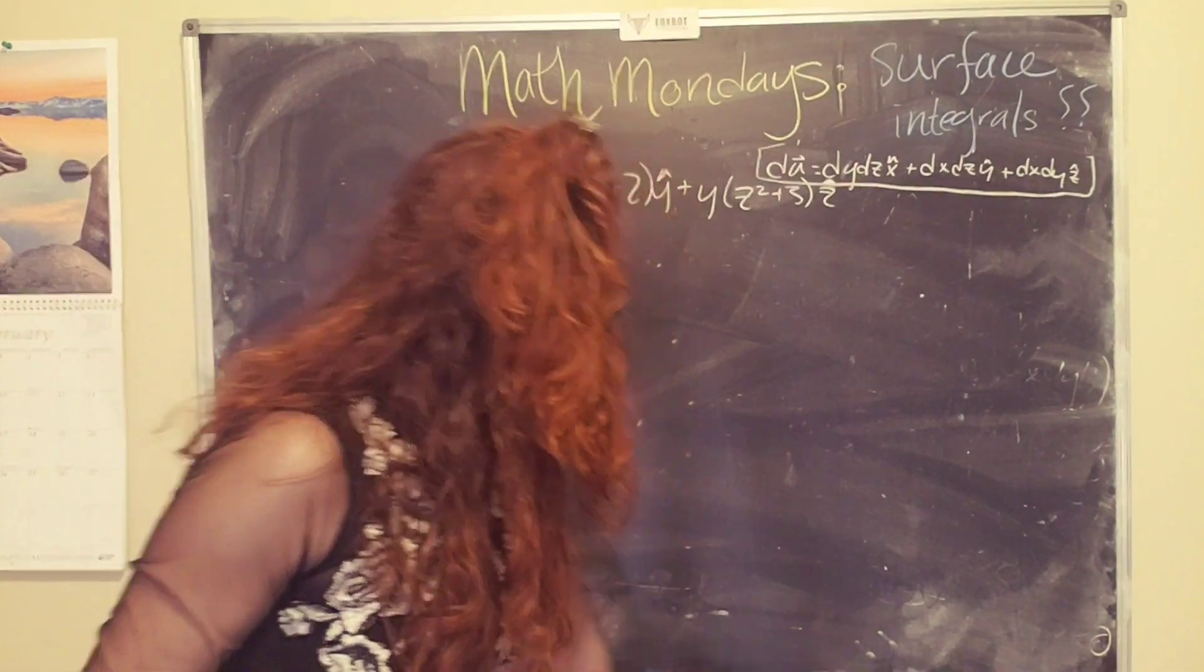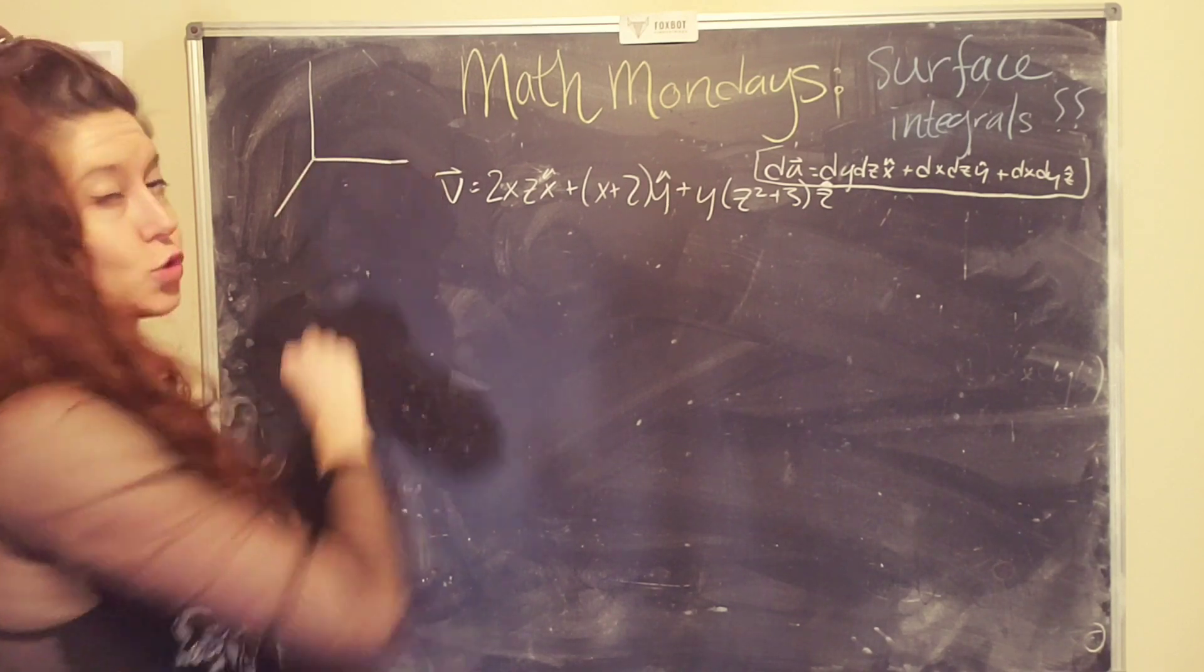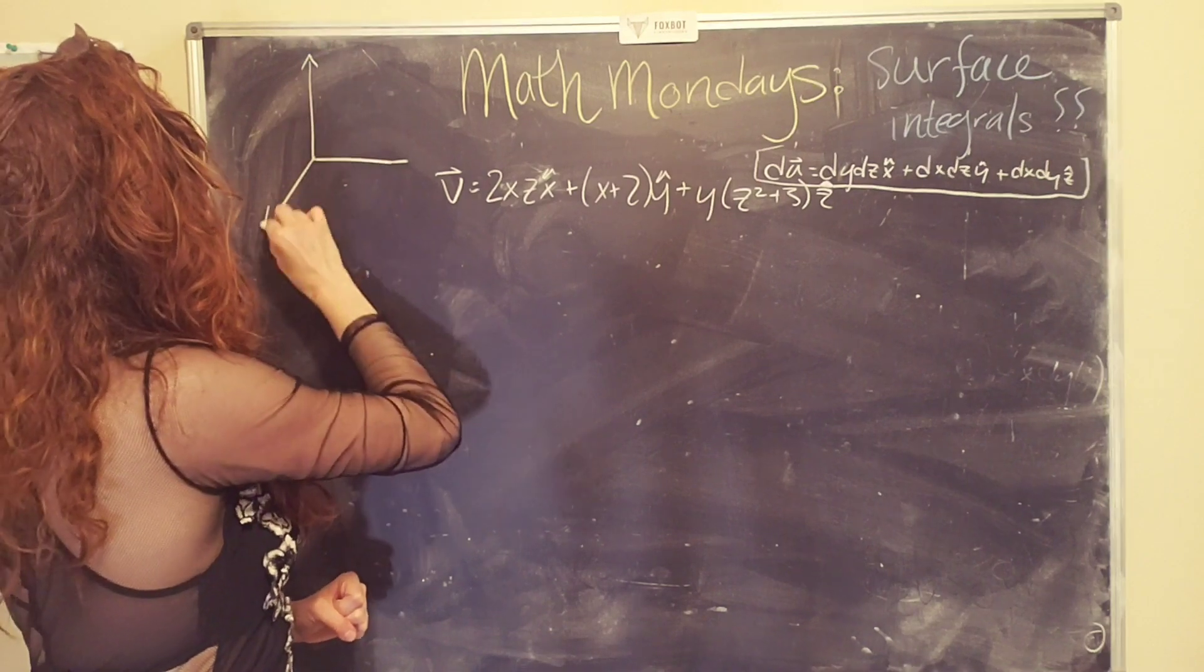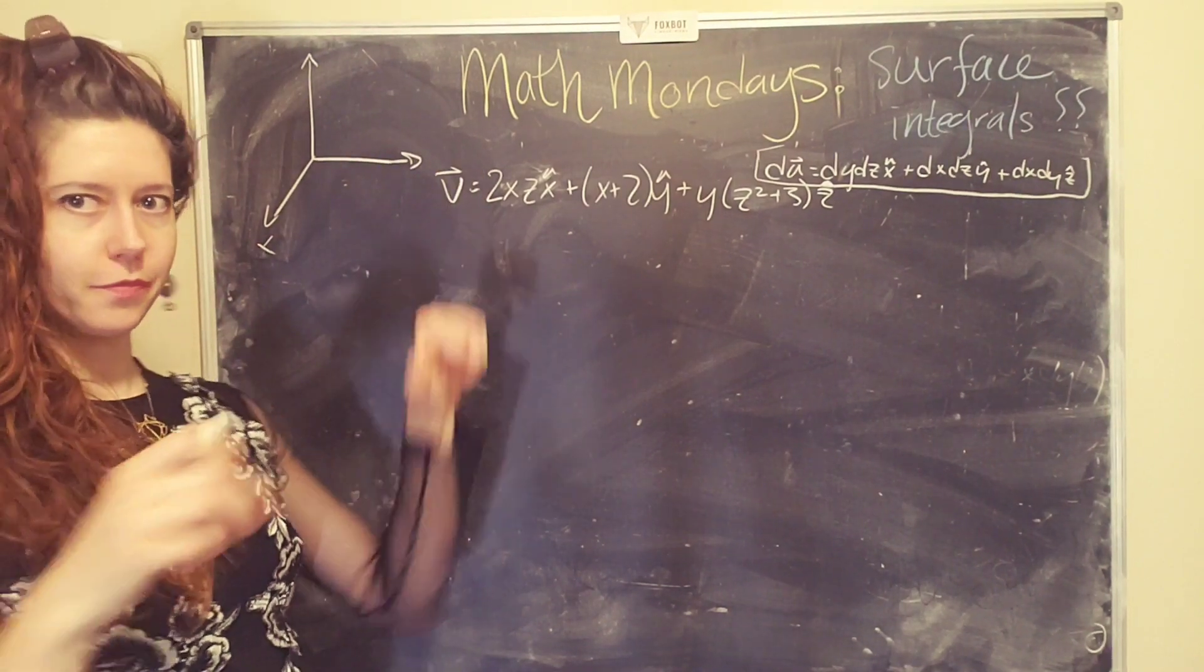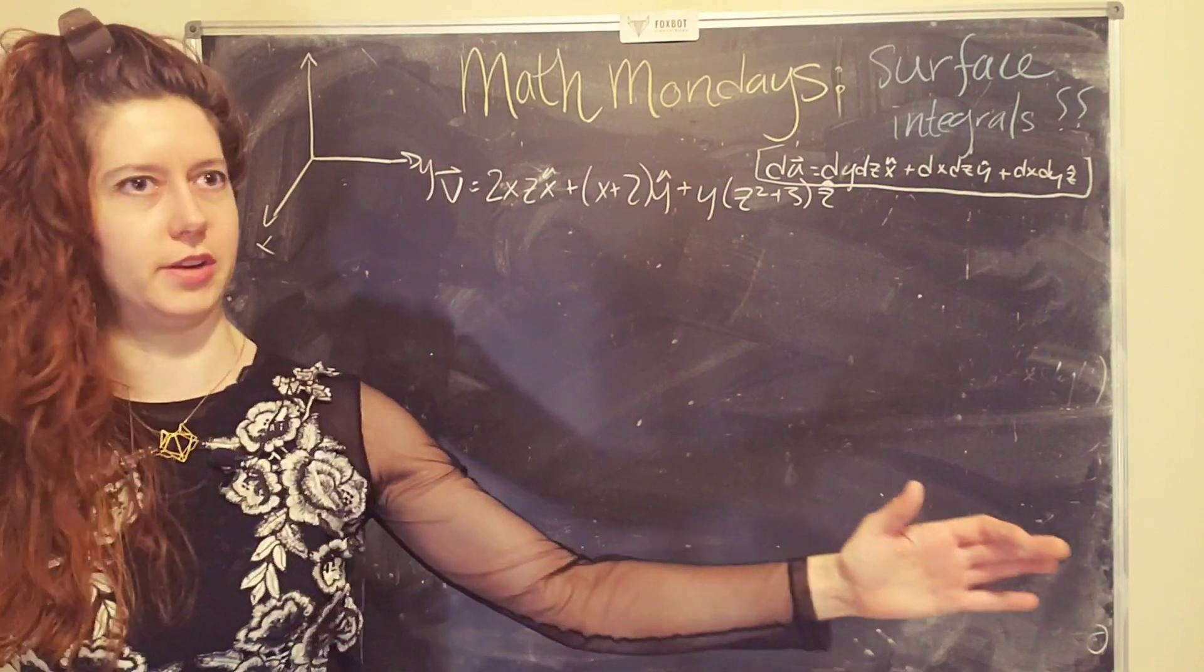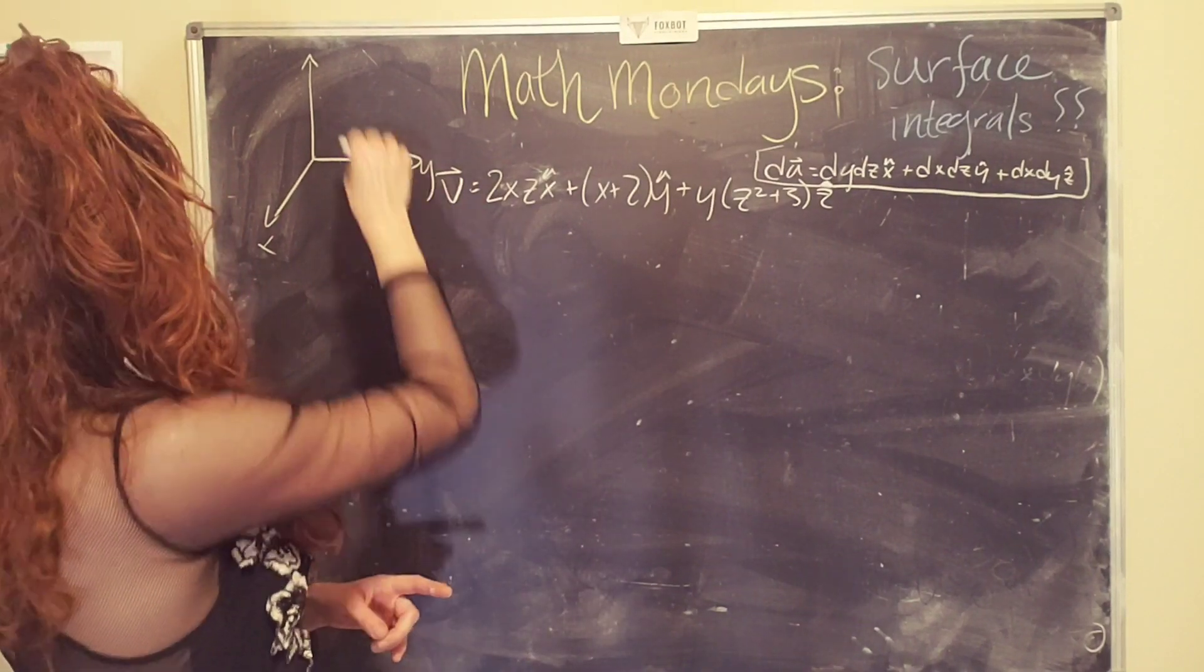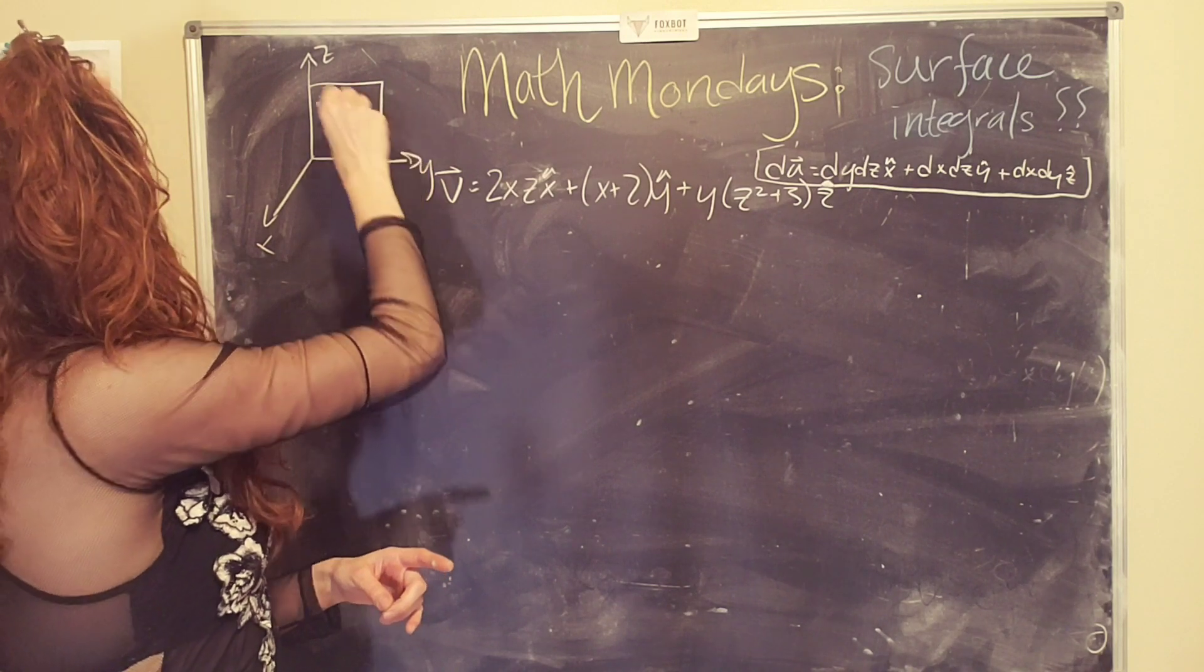And now we're going to draw a picture because pictures are super duper helpful whenever we're doing surface, line, or volume integrals. And my book defines the outward facing direction is x. The right, wait, no, no, hold on. My left, stage right, is that how it works? Is the y and this is the z.